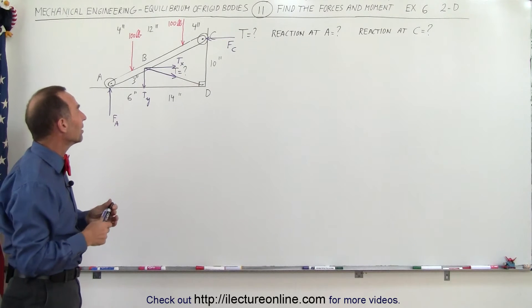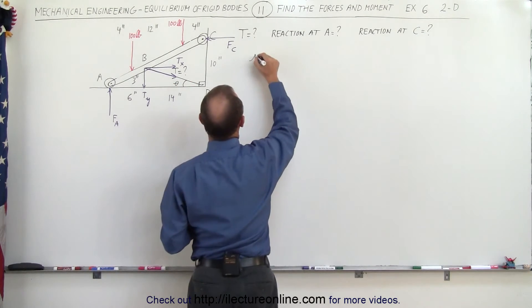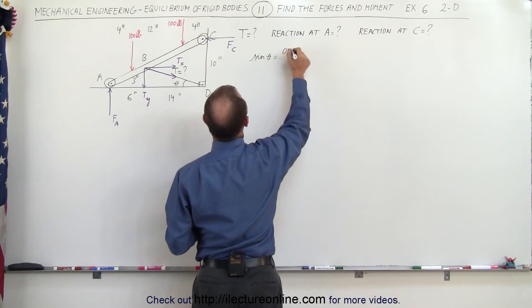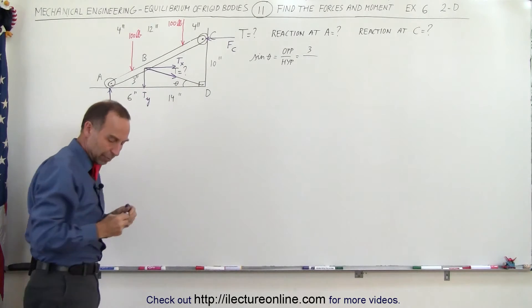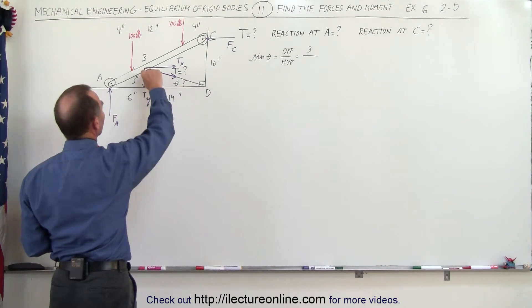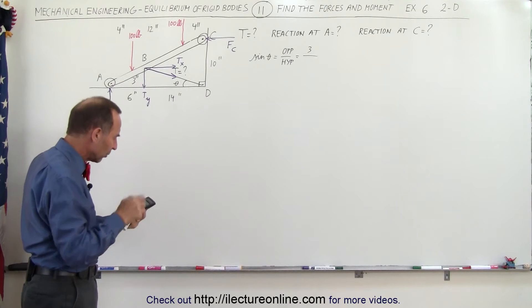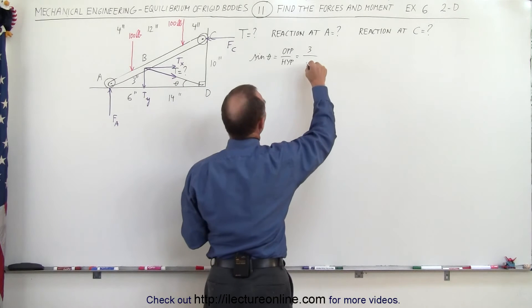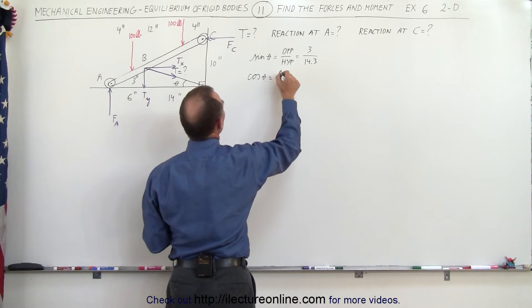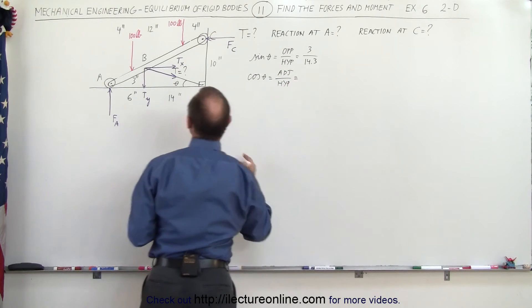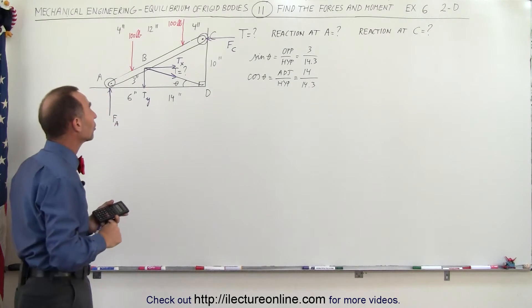How do we find T sub X and T sub Y? Let's call the cable angle theta and find sine and cosine. The sine of theta equals the opposite side divided by the hypotenuse. The opposite side is 3 inches, and the hypotenuse is found via the Pythagorean theorem: square root of 14 squared plus 3 squared equals 14.3 inches. So sine of theta equals 3 divided by 14.3, and cosine of theta equals the adjacent side 14 divided by the hypotenuse 14.3.